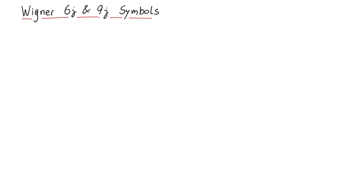In this video, we will explain the Wigner 6j and 9j symbols. They are closely related to the 3j symbols, which we cover in a different video, and play a role when you want to re-couple angular momenta in a different way.